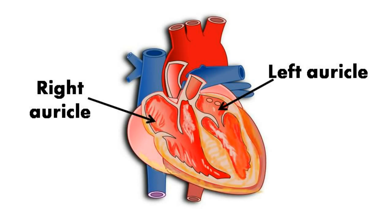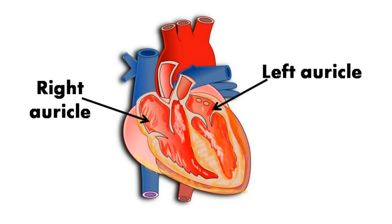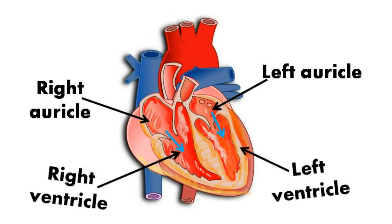The heart has four chambers. The upper two chambers are called atria or auricles — there are right auricle and left auricle. The two lower chambers are called ventricles — right ventricle and left ventricle. When the whole heart is relaxed, veins pour blood into the auricles. This relaxed stage is called the diastole stage. Then the auricle or atrium contracts — contraction of the heart is called systole.